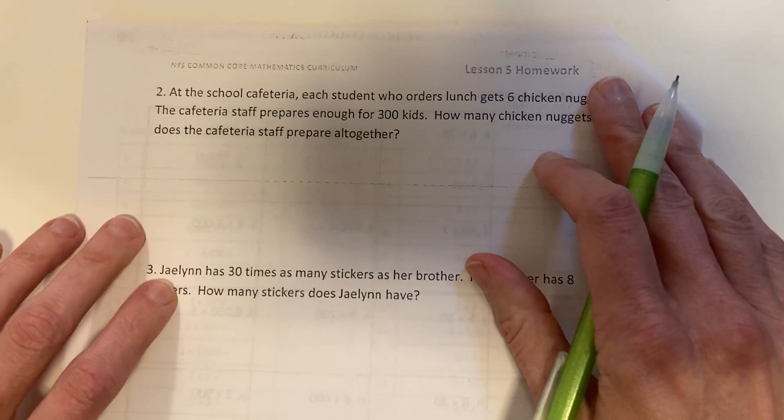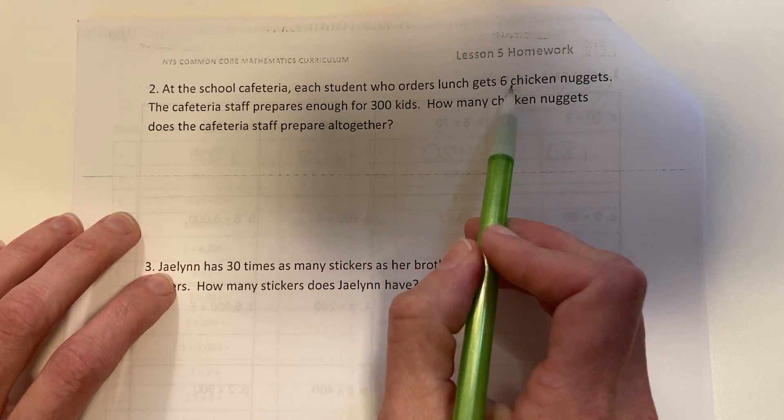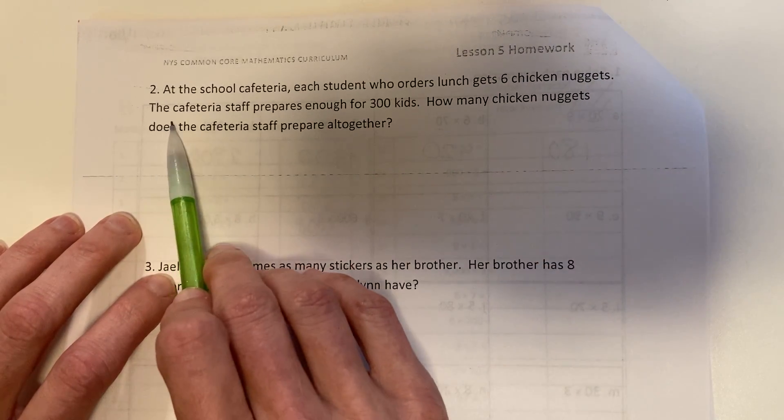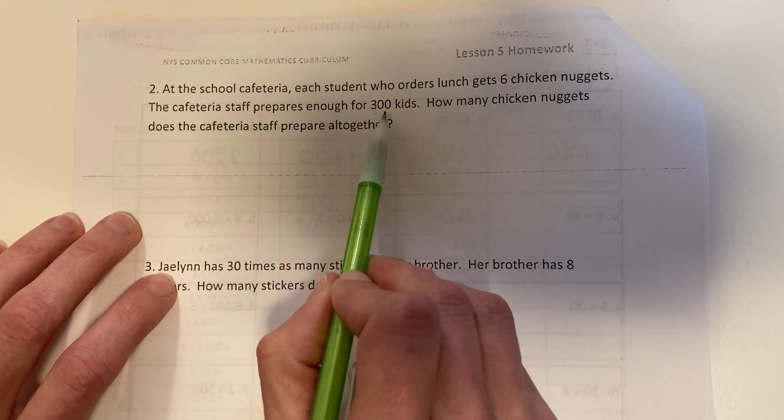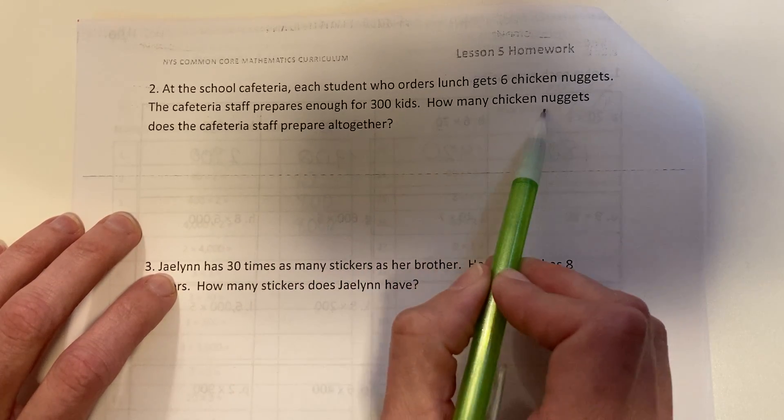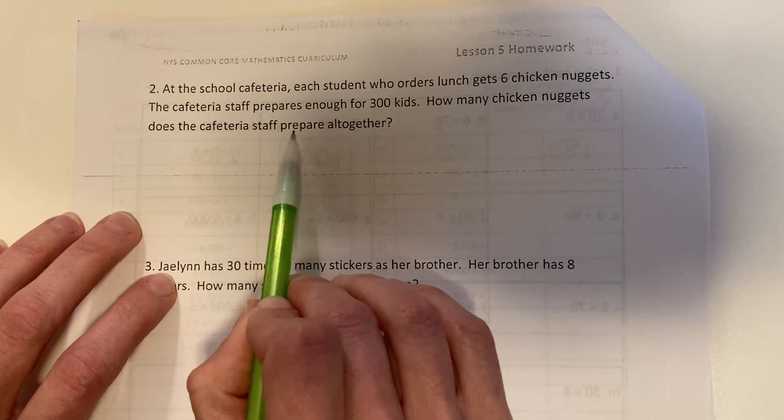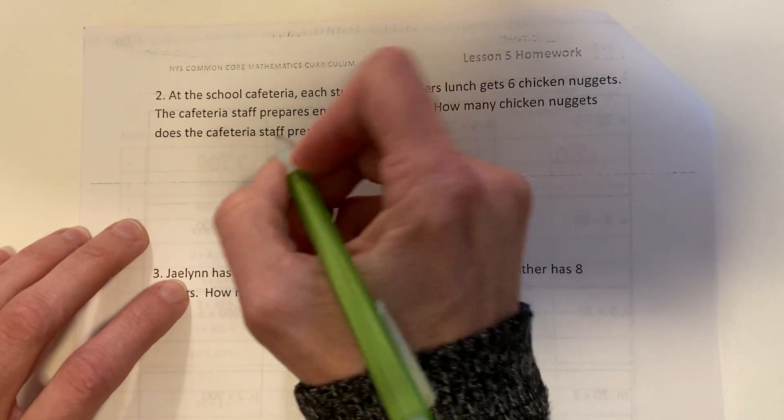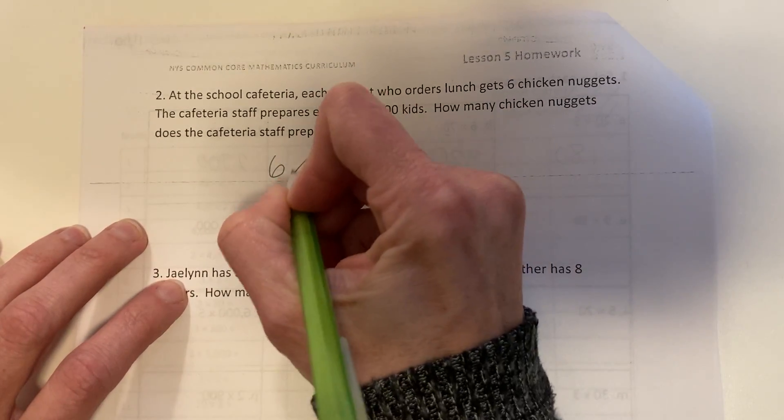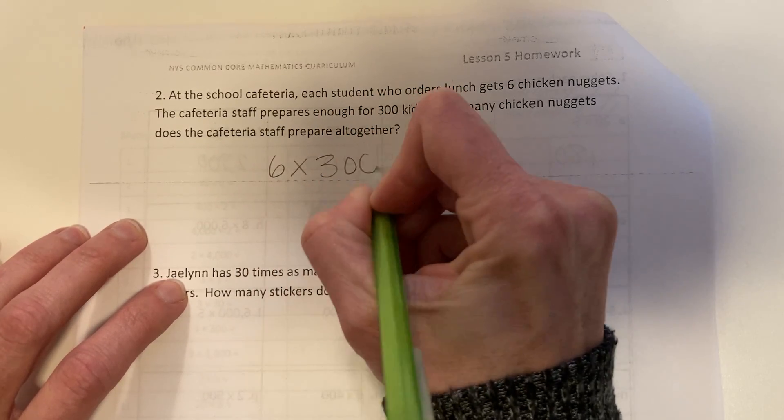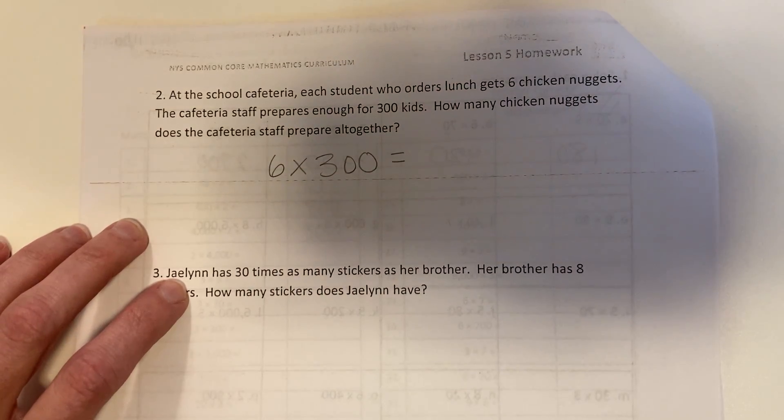At the school cafeteria, each student who orders lunch gets 6 chicken nuggets. The cafeteria staff prepares enough for 300 kids. How many chicken nuggets does the cafeteria prepare altogether? Every kid gets 6 and there's 300 kids, so 6 times 300 will give me my answer.